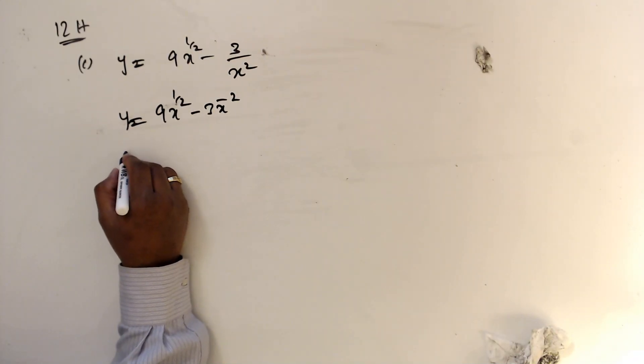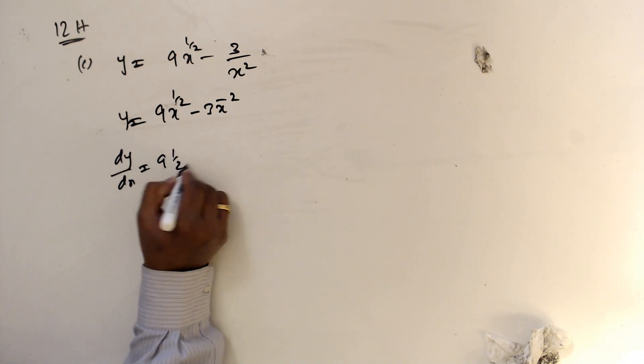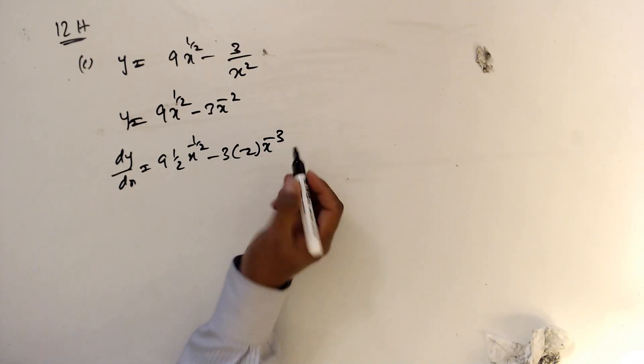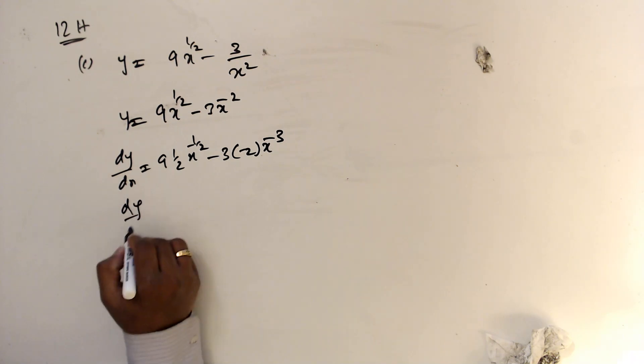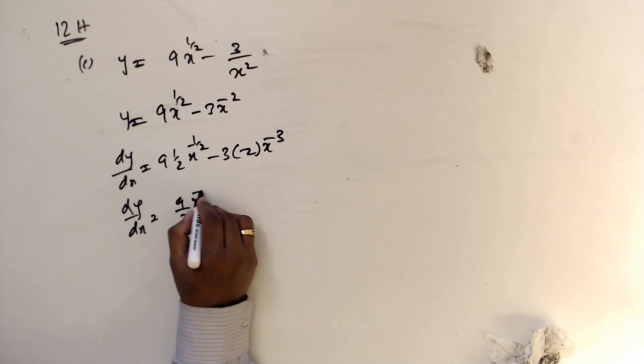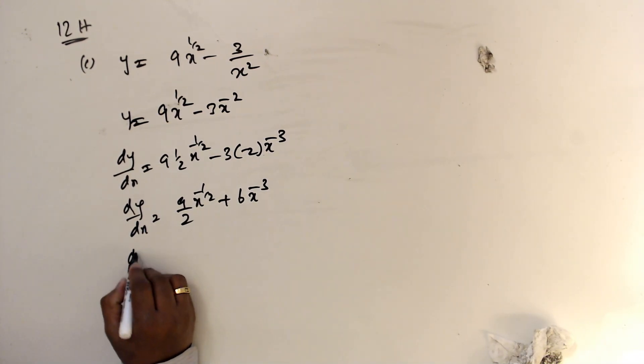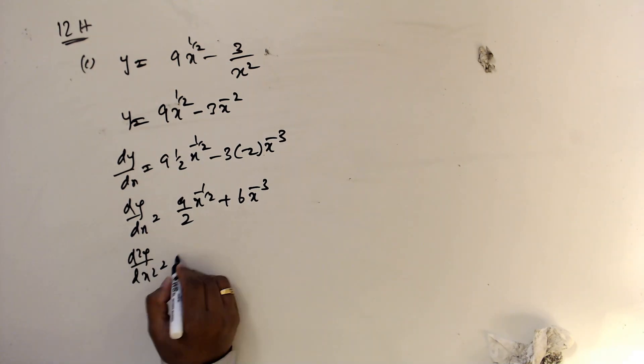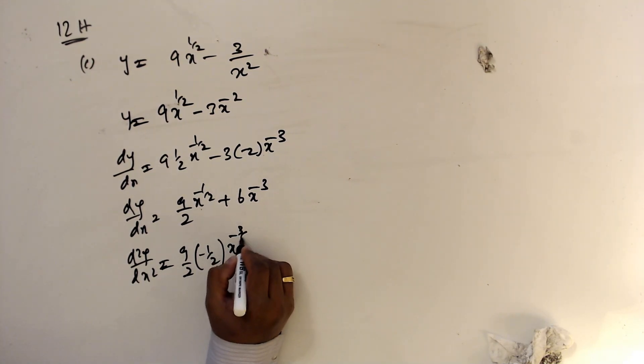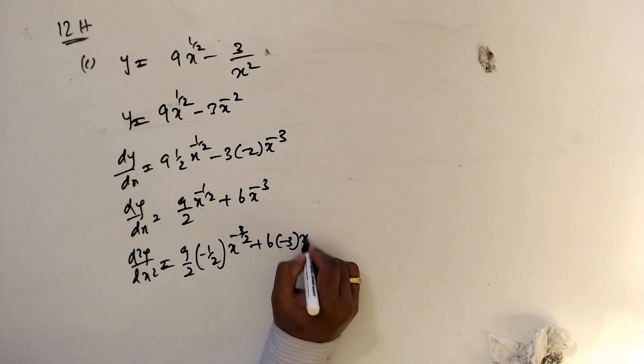So then dy over dx, 9 over 2 x to the minus half minus 3 times minus 2, x to the minus 3. So dy over dx is 9 over 2 x to the minus half and 6 times x to the minus 3. Then one more time, d squared over dx squared, 9 over 2 minus half x to the minus 3 over 2, minus half minus 1. But this is 6 minus 3 x to the minus 4.